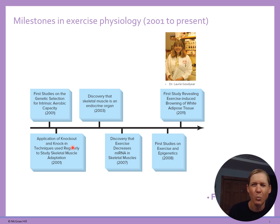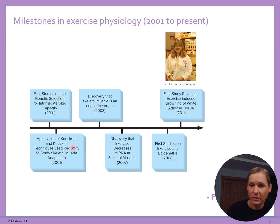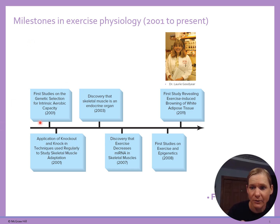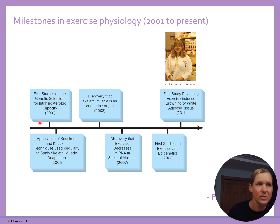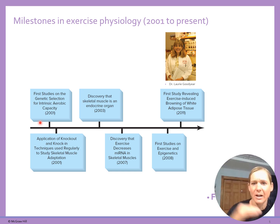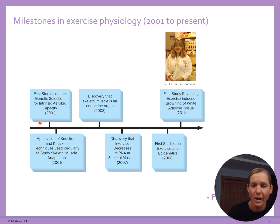The BRCA1 gene is associated with early onset breast cancer, and BRCA2 is something you would develop later in life. As it relates to coaching, it's really interesting when we think about how our athletes are going to be different in terms of reaching their true potential — a lot of that has to do with what's happening from a genetic perspective.